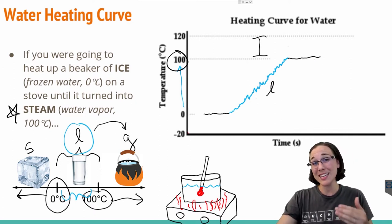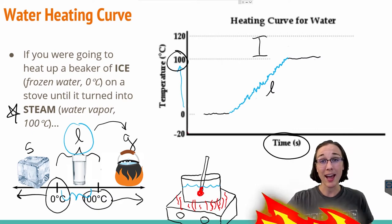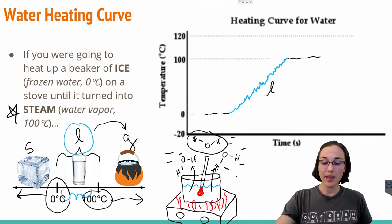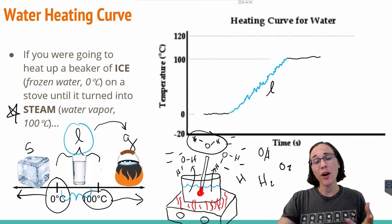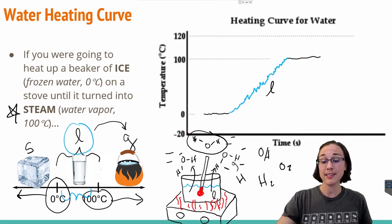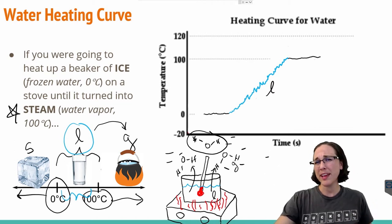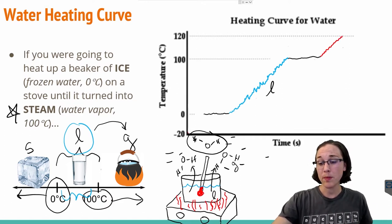From there on, if we continued heating over time our liquid water would turn into a gas. Notice that the water molecules stay together as H₂O — they're not breaking apart into H and OH or H₂ and O₂. When water turns from its liquid state into a gas it's still H₂O, just in its gas form. Again the graph would continue going upwards, and during that entire phase we would be a gas.